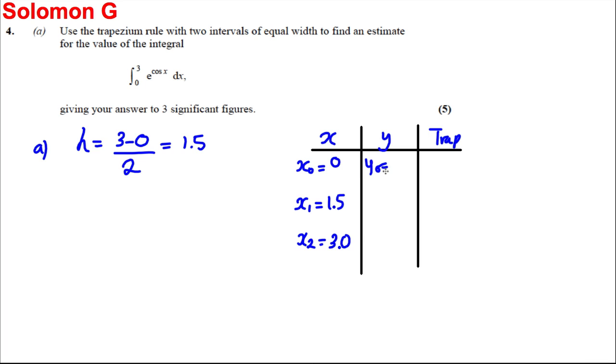Now Y₀ is the value of the function. It's going to be equal to e to the power of cos zero. And cos of zero is 1, so it's e to the 1, so it's just the number e.